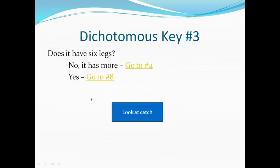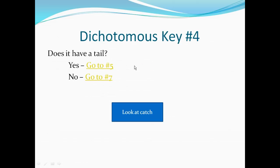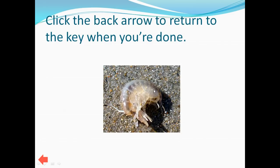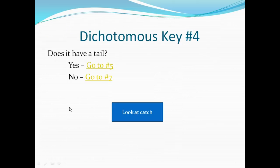We click the back arrow and answer No, it has more, and it tells us to go to number four. This one asks if it has a tail. We can check to make sure. I can't really tell, so I'm going to go ahead and say it doesn't have a tail for now, and select No.